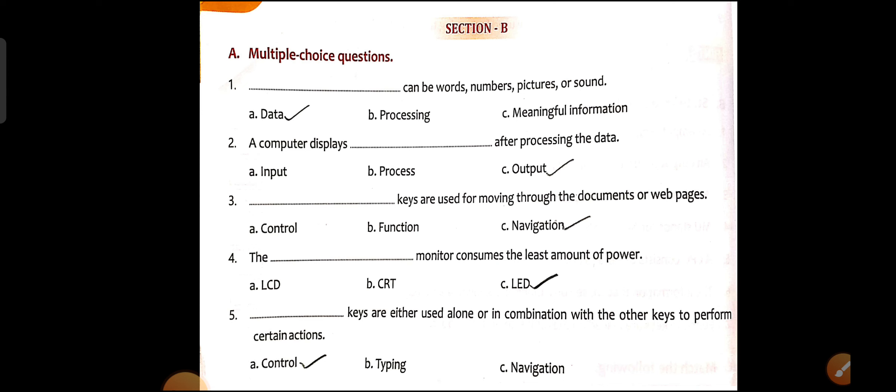Multiple choice questions. Blank can be words, numbers, pictures, or sound — the answer is Data. Next: A computer displays blank after processing the data. When we give data as input, the computer processes it and gives us a result. The answer is Output.